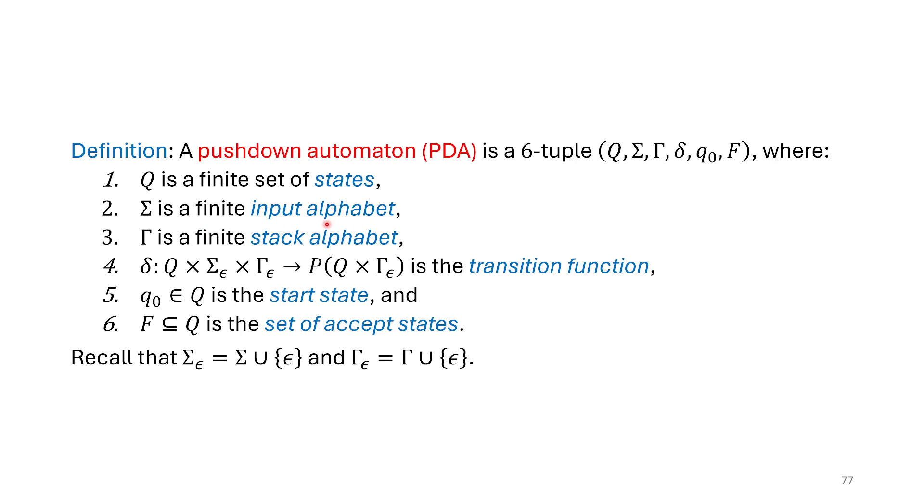We've got Q, that's our set of states, similar to what we've seen before in an automata. Sigma, that's our input alphabet, the same thing that we've been using it for before. We've got something new now is gamma. Gamma here is the stack alphabet. And the stack alphabet might be different and usually is from the input alphabet. The stack alphabet of our last machine was dollar sign and zero. We didn't use the ones on our stack, but our input alphabet was zero and one.